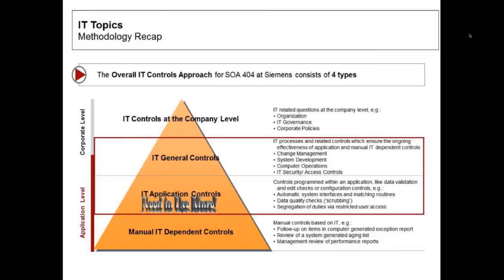Very important: IT controls. We look not just at important processes but important systems. In IT there are four basic types. Company-level controls provide governance over your organization. IT general controls are critical for any significant system for financial reporting under SOX — they require that access and security is locked down, change management is locked down, systems development is locked down, and the data center is locked down.